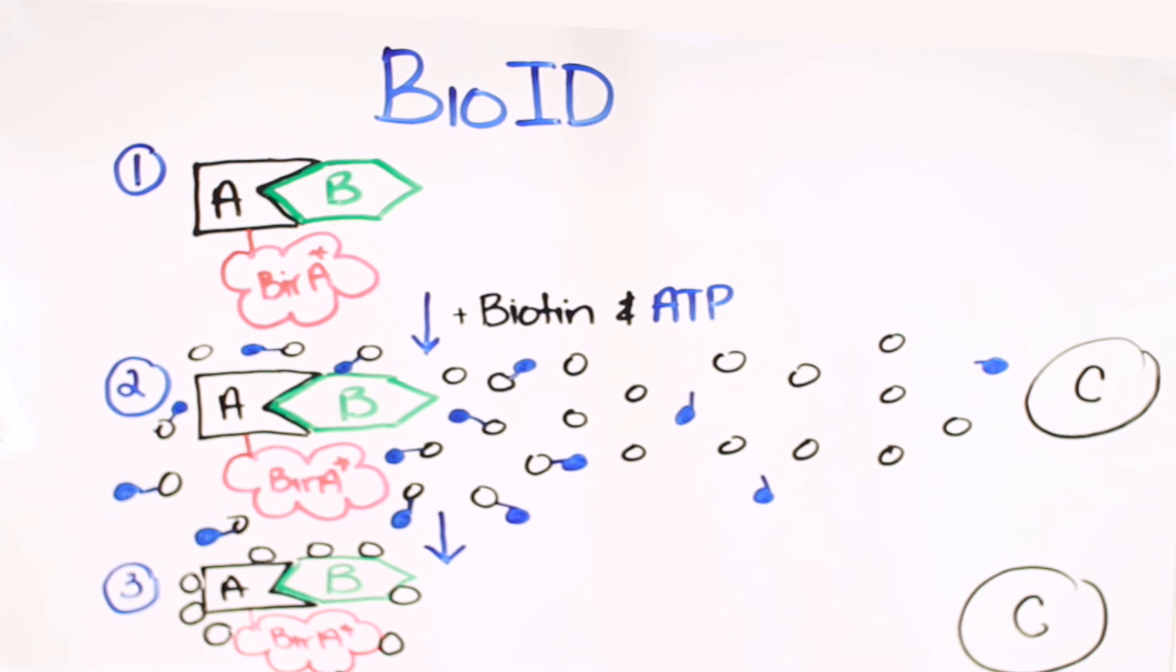Biotinylated proteins are isolated using affinity capture with streptavidin beads, and the captured proteins can be identified using mass spectrometry.